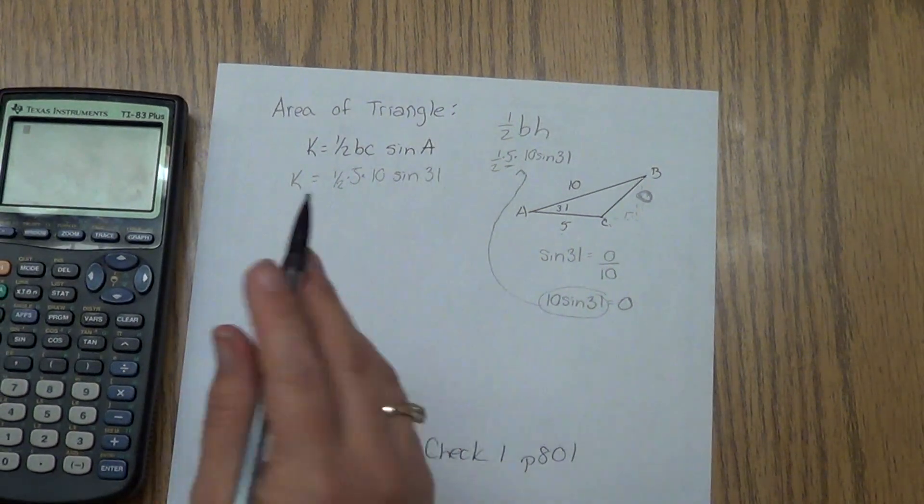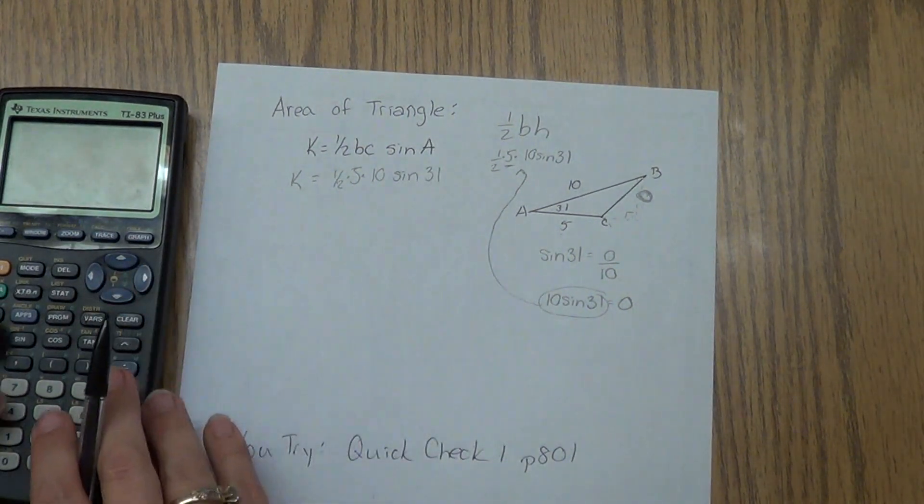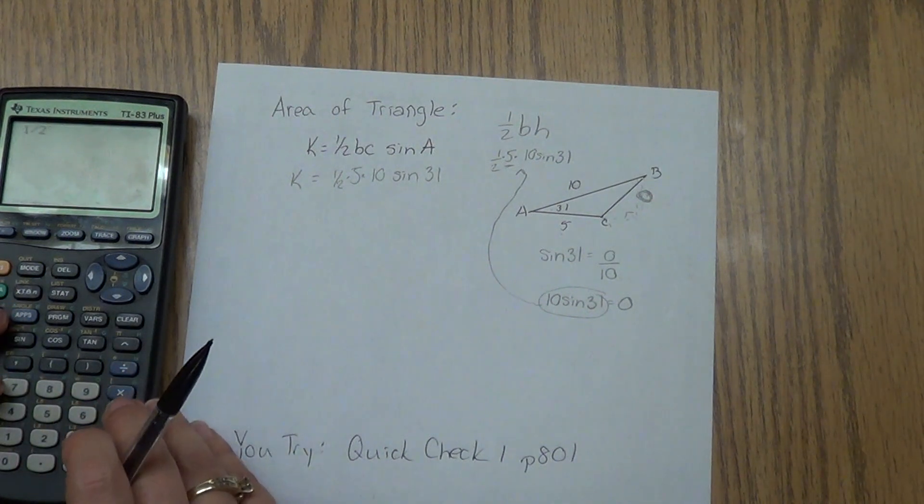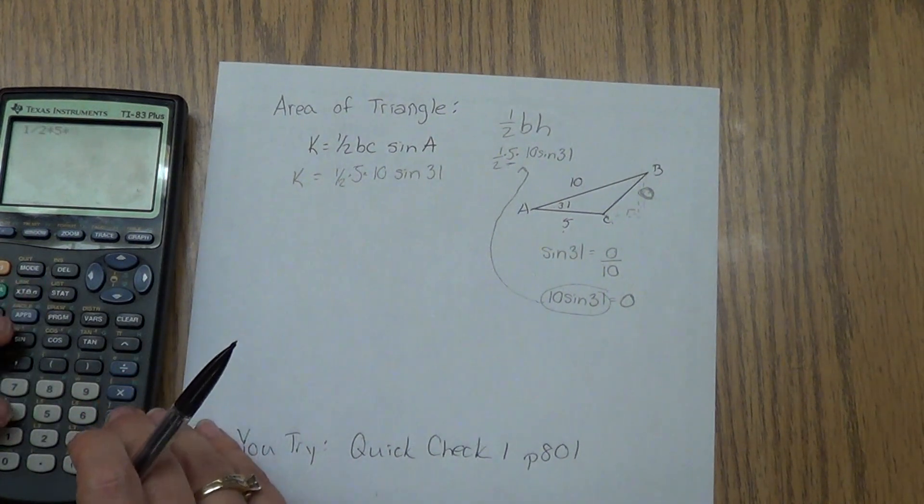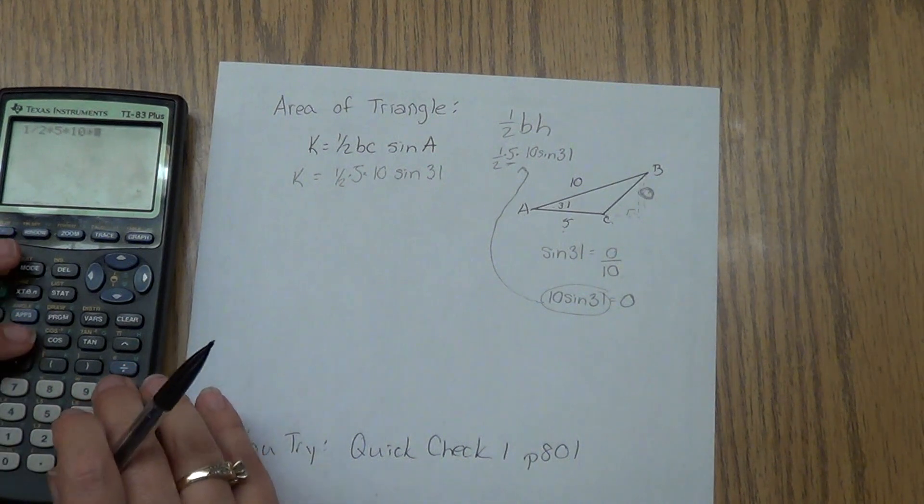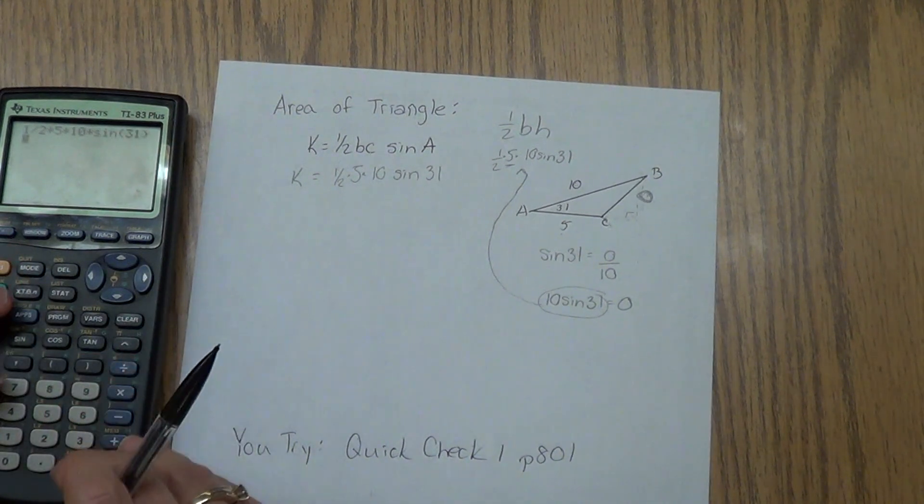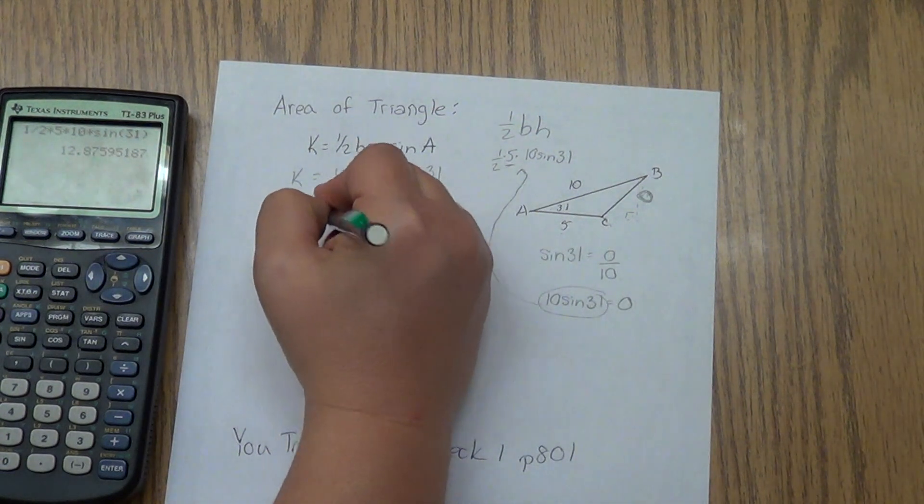So once we know the formula, we just type it in our calculator. Again, make sure that your calculator is in degrees. If it's not in degrees, you're going to get all screwed up. Anytime you're working with trig on your calculator, you want to make sure whether you're in degrees or radians.